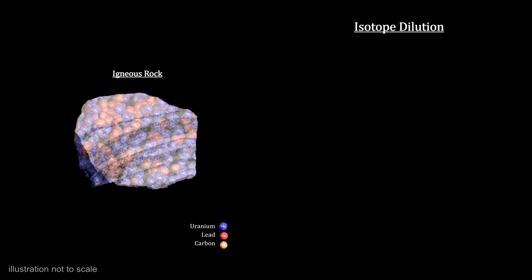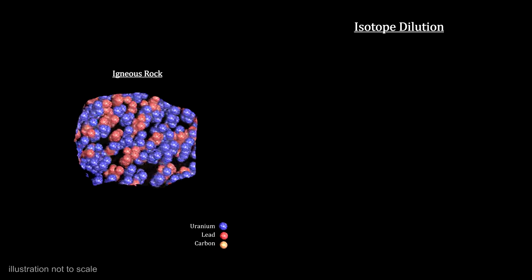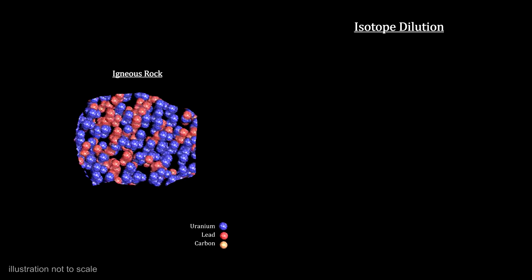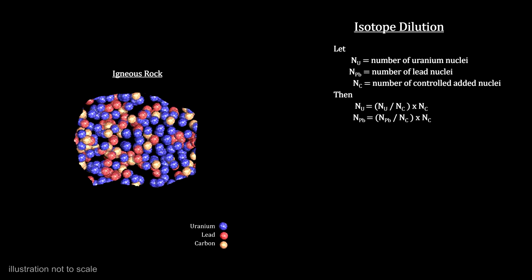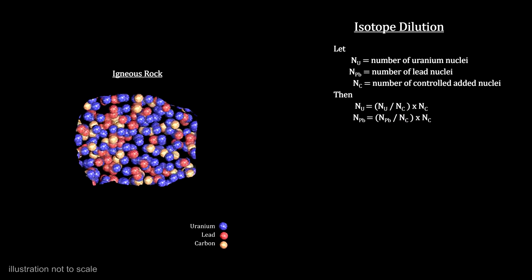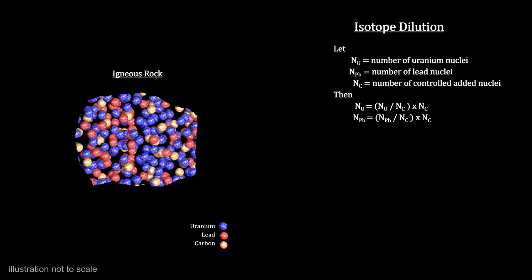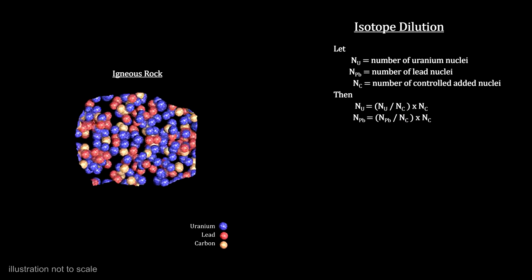But there is a straightforward way to determine the number of atoms in a sample like this. All we need to do is add a measured amount of a different element. Take a sample of the mixture and measure the ratio of the sample to the additive. This process is called isotope dilution.